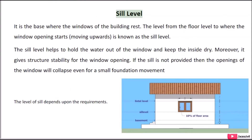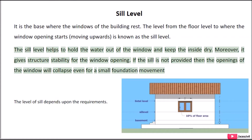Sill Level: It is the base where the windows of the building rest. The level from the floor level to where the window opening starts, moving upwards, is known as the sill level. The sill level helps to hold water out of the window and keep the inside dry. Moreover, it gives structural stability to the window opening.